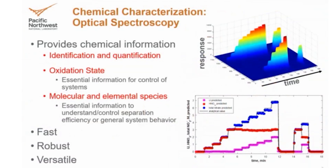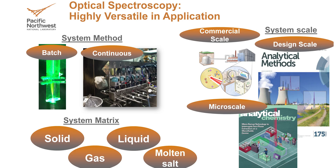Those three topics — fast, robust, and versatile — are important in and of themselves, but we are limited in time today, so I'm going to focus on the versatility of optical spectroscopy. Our team has designed many different optical spectroscopy-based online monitoring systems to look at a wide range of things. We've used optical spectroscopy to go after a huge range of analytes: not just uranium, but other fission products, corrosion products, waste species, gas streams, and so on.